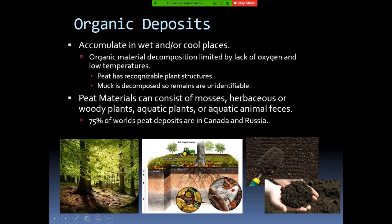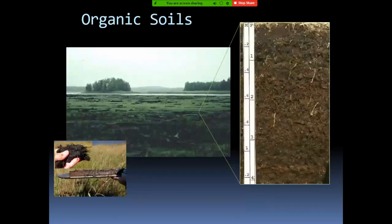If you look at organic soil and take a handful, the color is really black. You may not find this type of soil in Oman, but if you go to European countries or areas with forests, you would find this type of soil — really dark, black soil. If you excavate, it is full of organic material, as you can see in organic soil pictures.